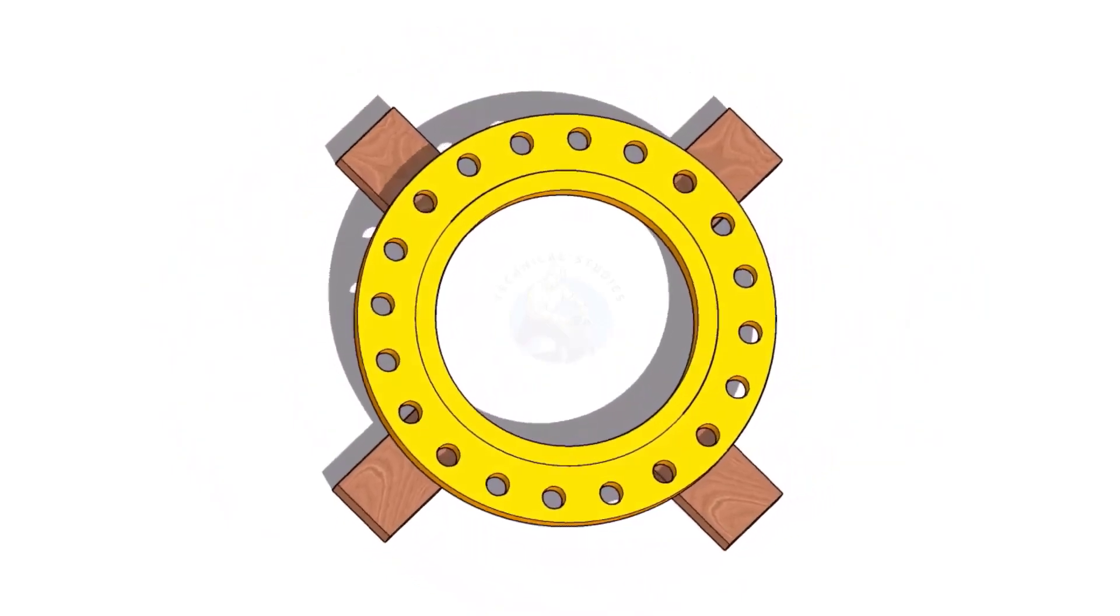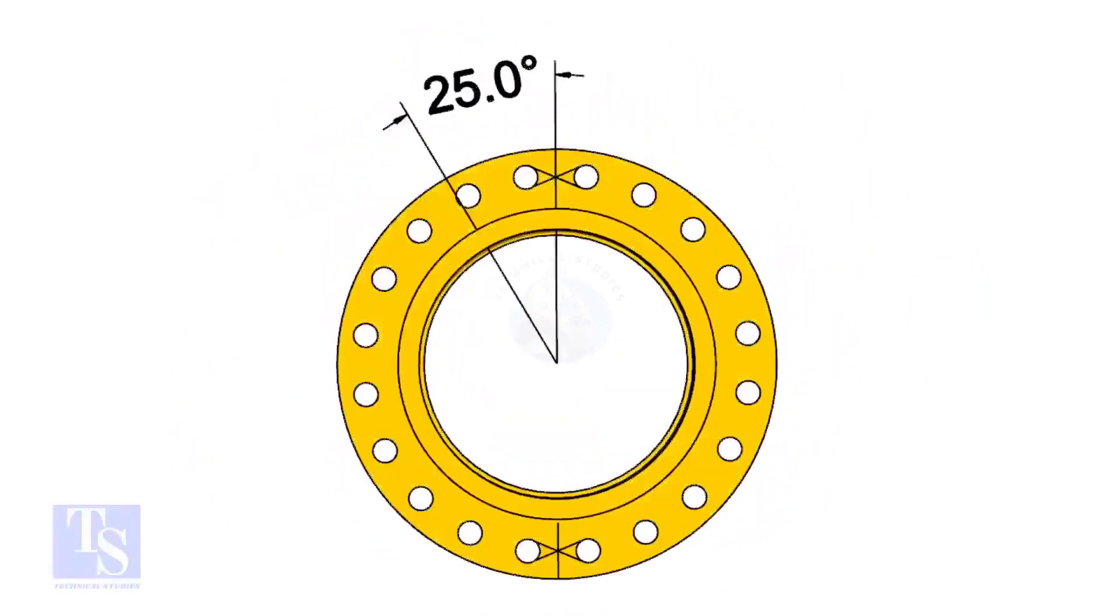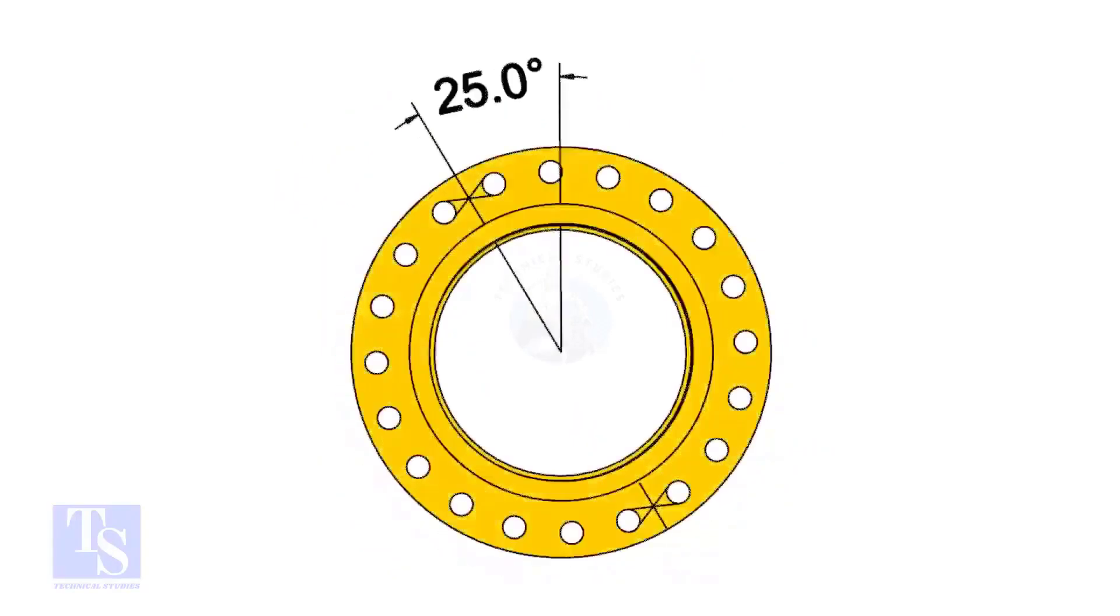The pipe and the flange size is 16 inch, and the flange will rotate 25 degree anticlockwise. Hope you all know the difference between clockwise and anticlockwise rotation.